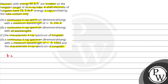इस question को solve करने के लिए जो key concept हमें use होगा, वो यह है कि energy और wavelength के बीच में जो relation होता है: E = hc/λ। यहाँ पर अगर energy electron volt में है और wavelength Angstrom में है, तो यह formula हो जाएगा 12431 divided by wavelength (in Angstrom)।